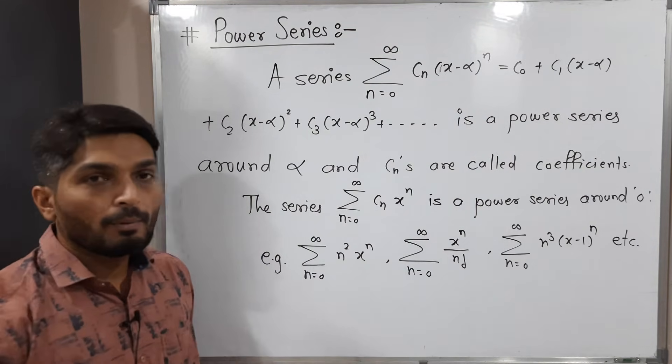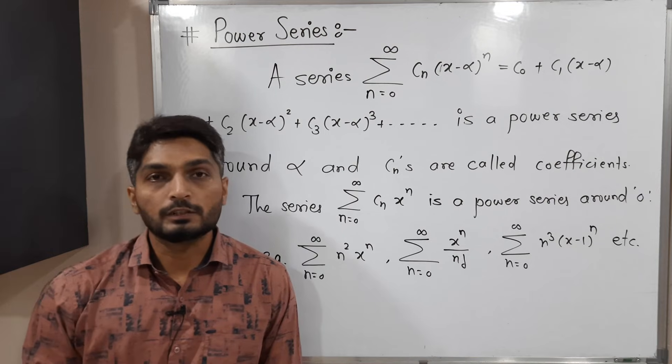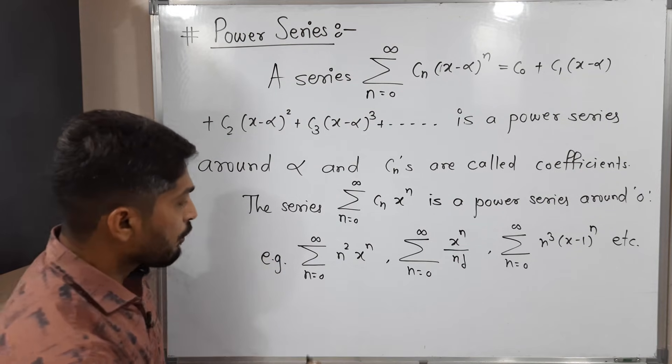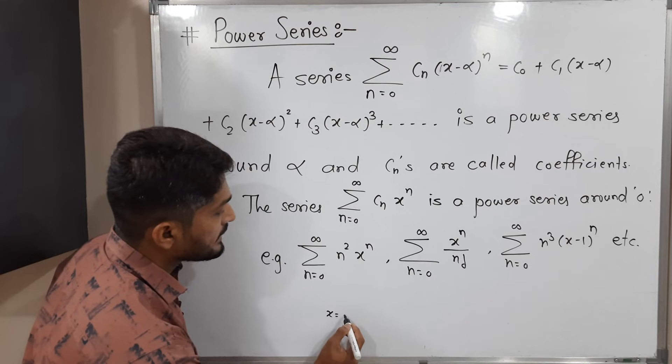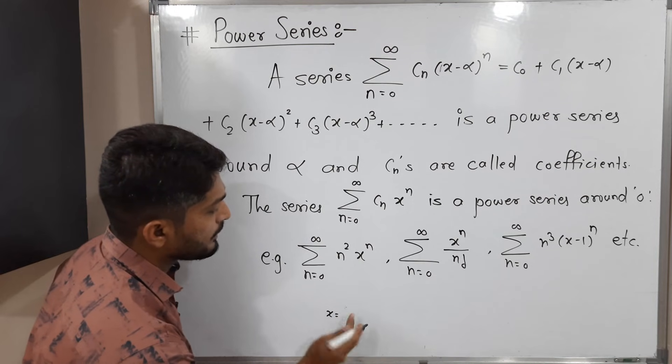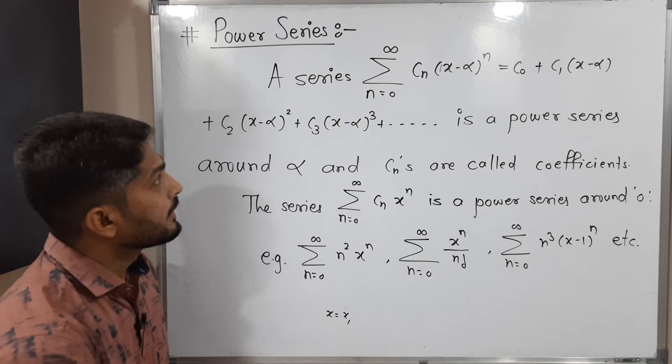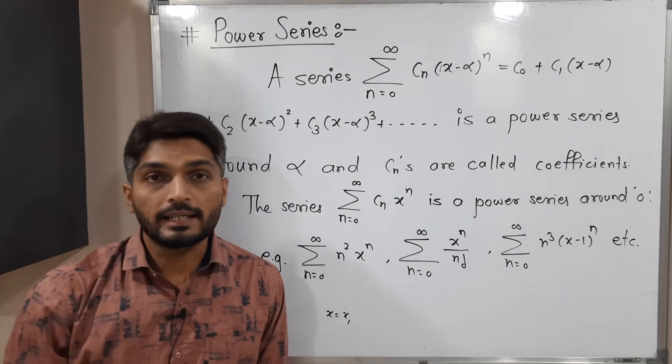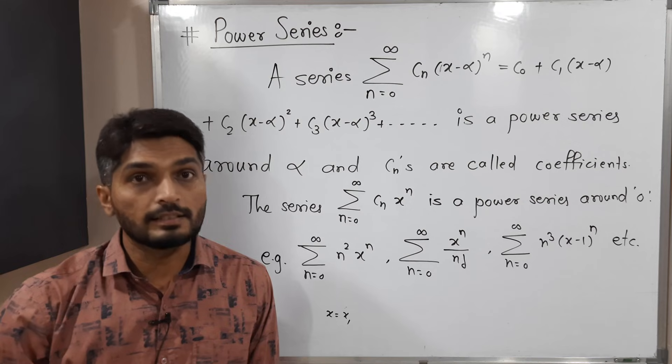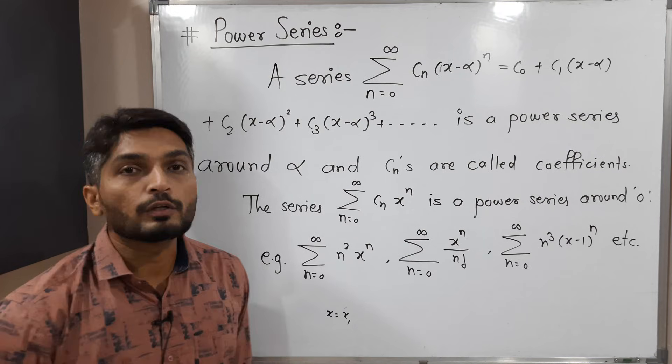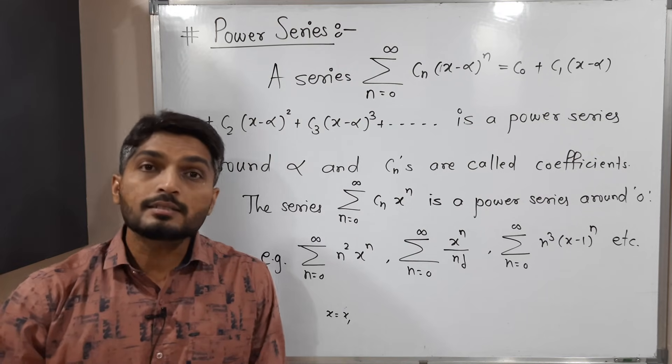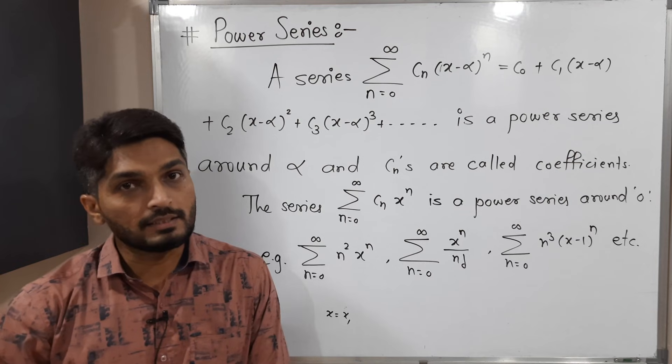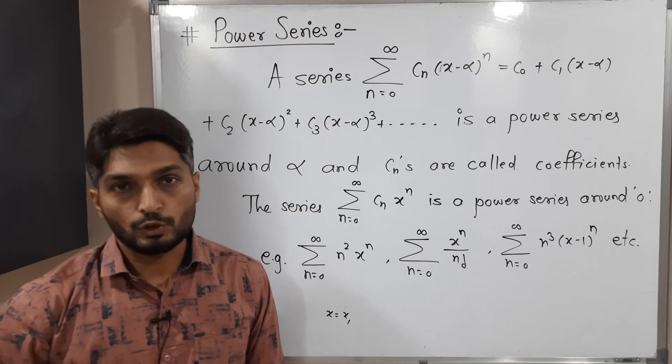Let's talk about when we say the power series is convergent and when we say it is divergent. For a particular value of x, suppose x equals 2, or x equals some general point x1. If the value of that sum is finite, then we say the power series is convergent for that particular value x1. And if the sum is infinite, then we say the power series is divergent.